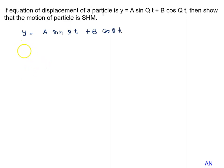Firstly we differentiate it. We calculate the velocity, that is dy by dt. It will be A sin Q t becomes cos Q t, Q comes out, B cos Q t becomes minus sin Q t, Q comes out.